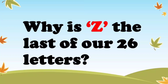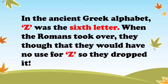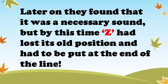Why is Z the last of our 26 letters? There's a pretty little story behind it. In the ancient Greek alphabet, Z was the sixth letter. When the Romans took over, they thought that they would have no use for Z, so they dropped it. But later on they found that it was a necessary sound, but by this time Z had lost its old position and had to be put at the end of the line.